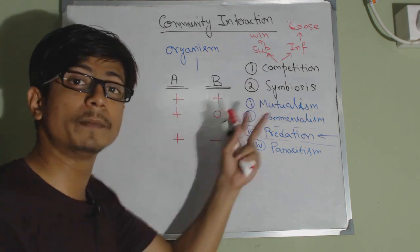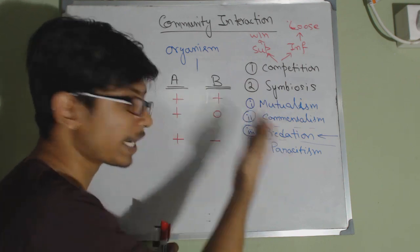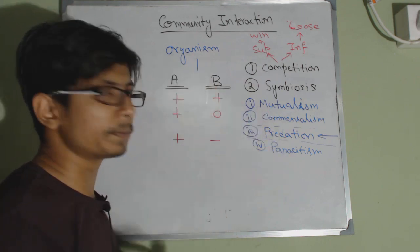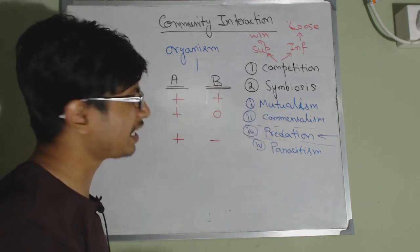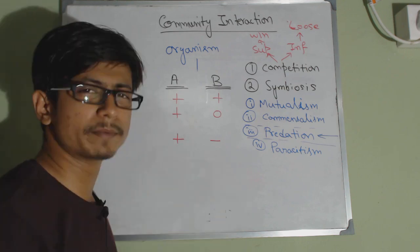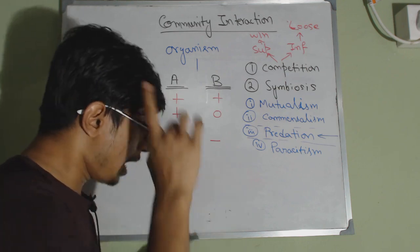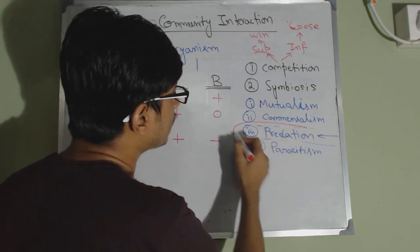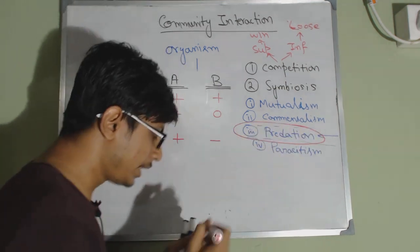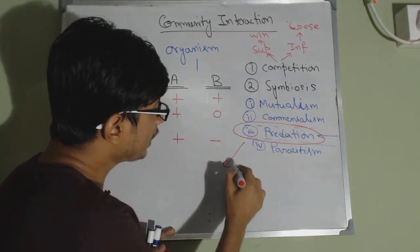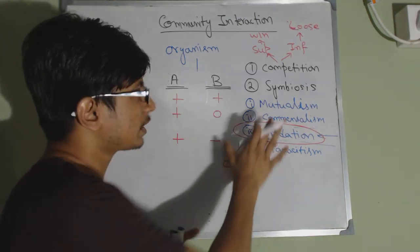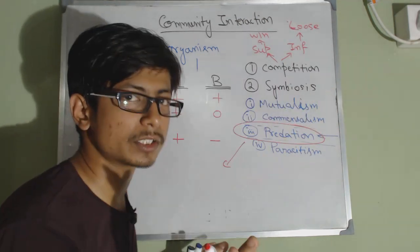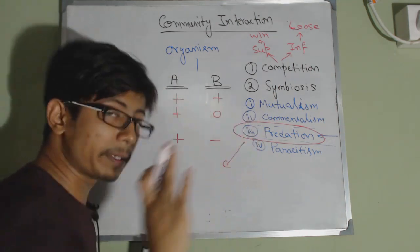These are the examples of mutualism, commensalism, and parasitism — the three main types of symbiosis. One thing that remains is predation, which does not belong to symbiosis.